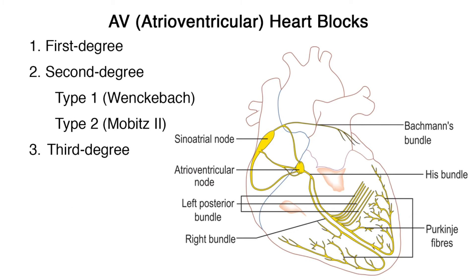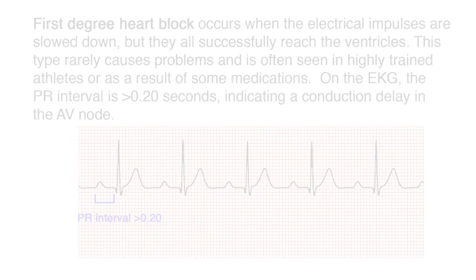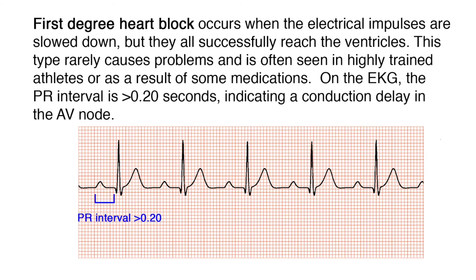The AV blocks are identified by their severity: first degree; second degree, which can be subdivided into type 1 (Wenckebach) and type 2 (Mobitz 2); and third degree heart block. First degree heart block occurs when the electrical impulses are slowed down but all successfully reach the ventricles. This type rarely causes problems and is often seen in highly trained athletes or as a result of some medications. On the EKG, the PR interval is greater than 0.2 seconds, indicating a conduction delay in the AV node.